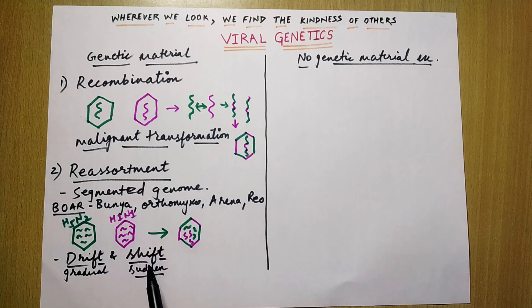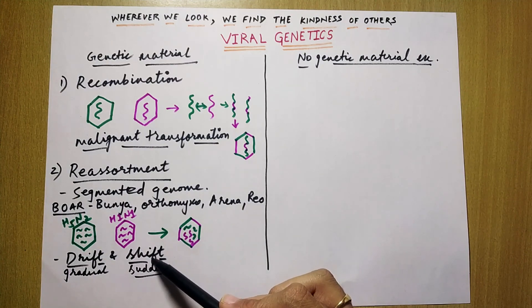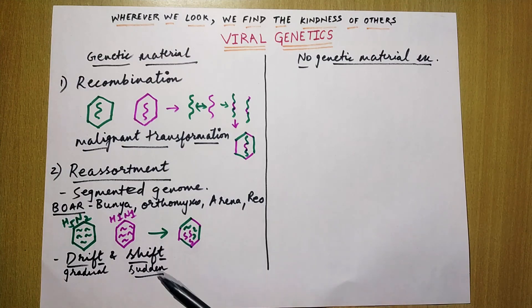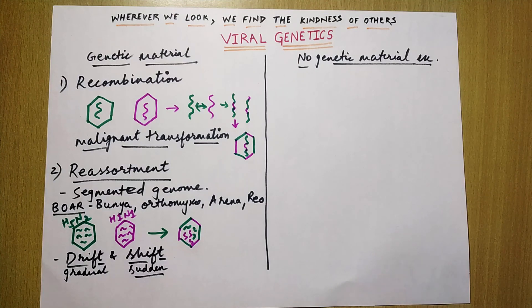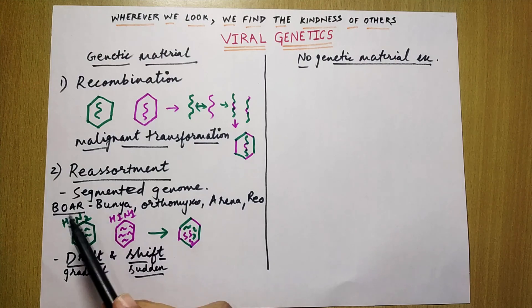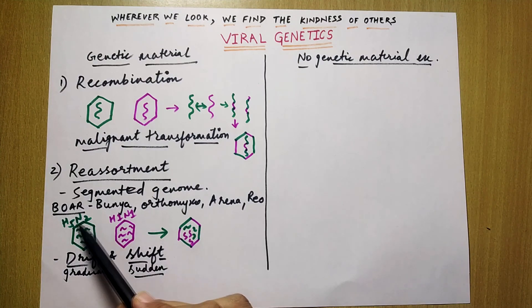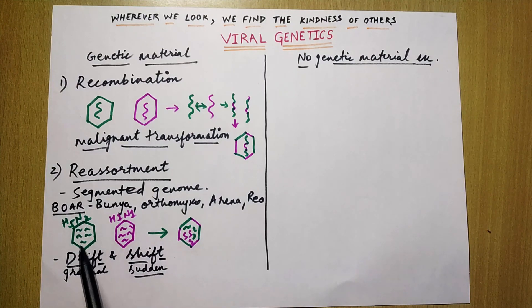To remember which one is more dangerous — if you remember the letter F from the spelling of 'shift,' it will help you remember that shift is more dangerous than drift. Now one question arises: why does this kind of reassortment not occur in bacteria? The reason is that not all bacteria have segmented genomes, and second, bacteria do not open up their genetic material in the host cell — whereas viruses do open their genetic material in the host cell, and that's why there are more chances of this kind of exchange occurring.